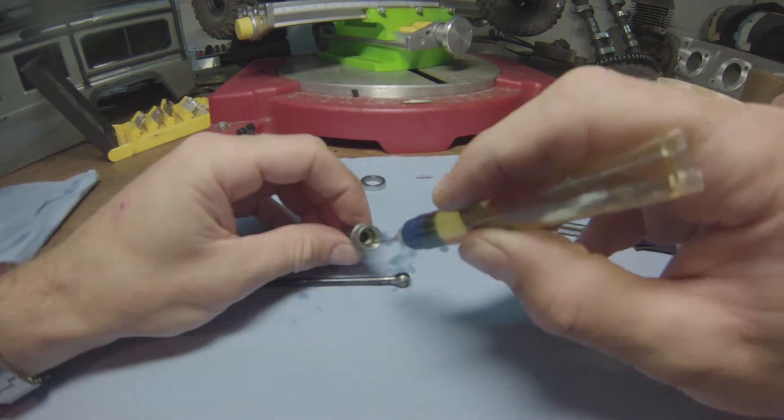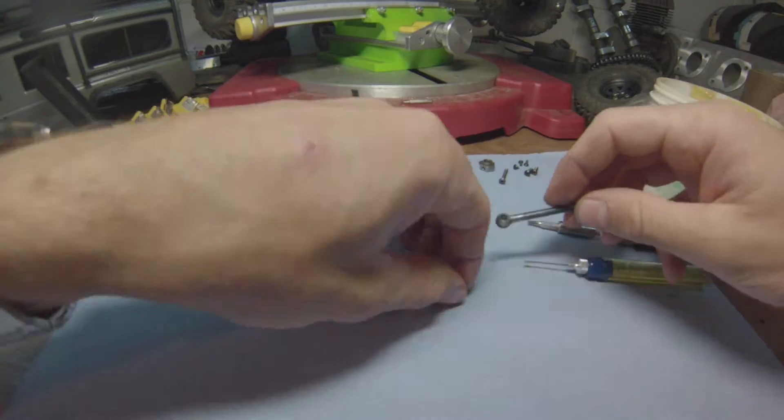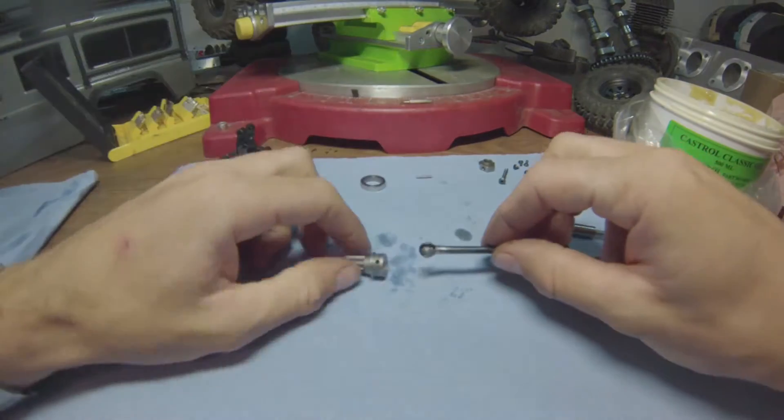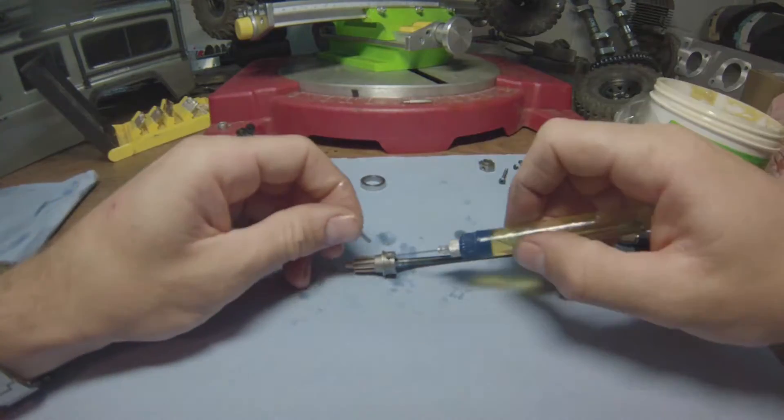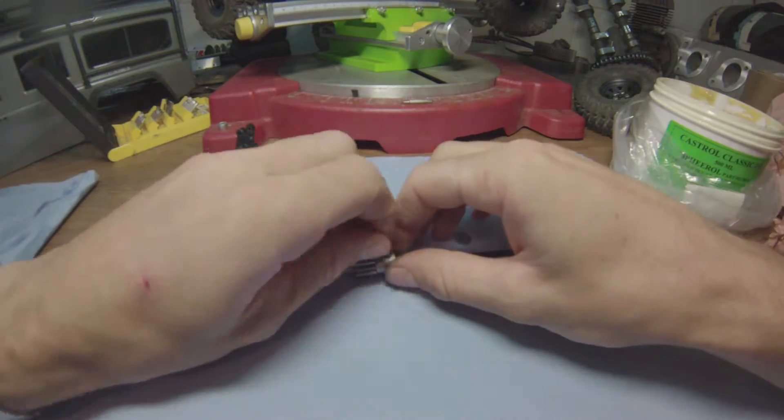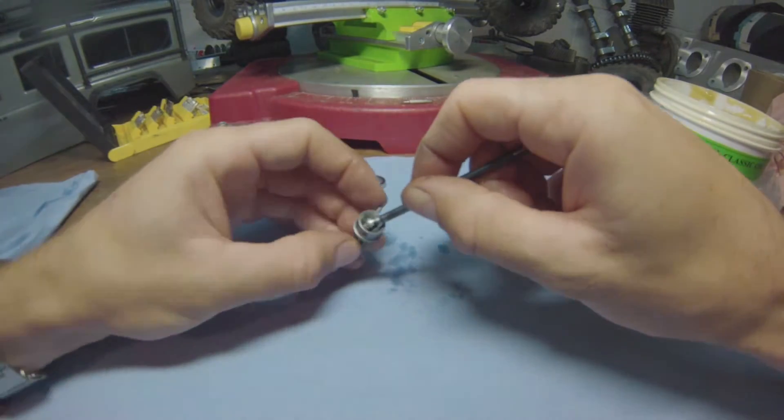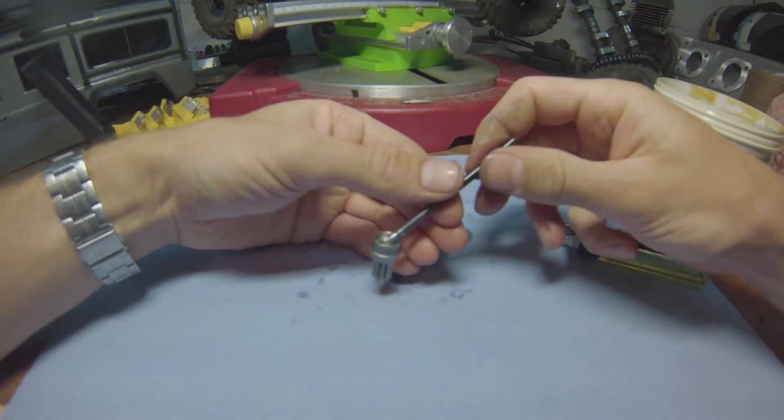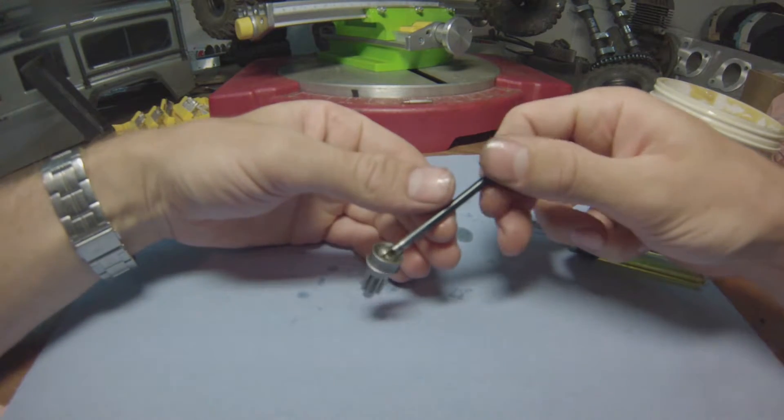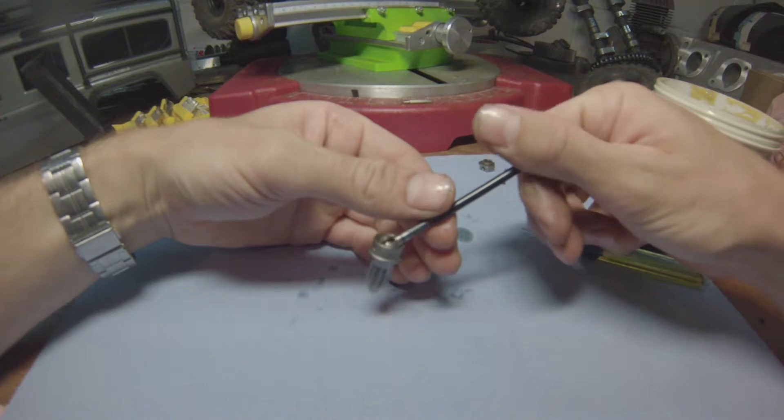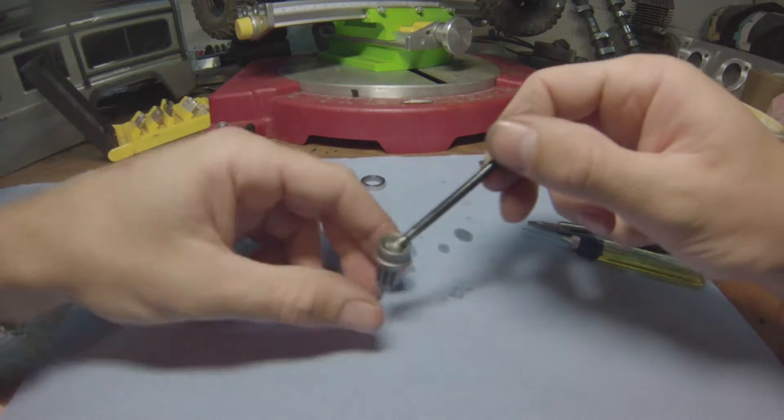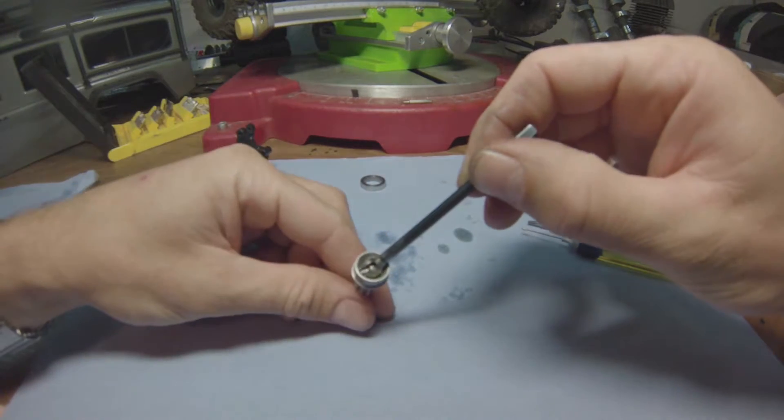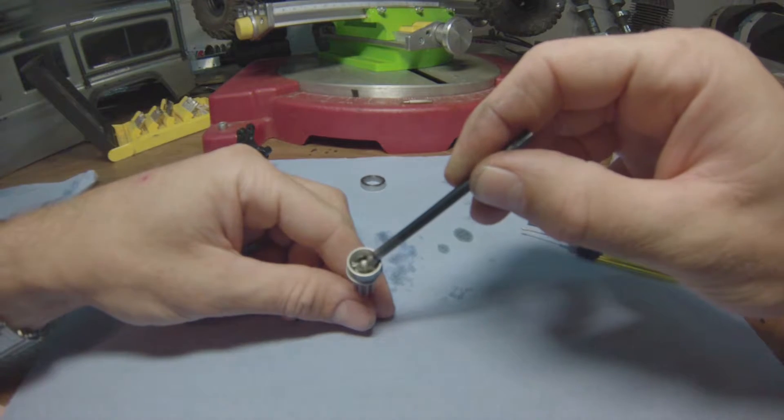Nearly done. So now we want to reassemble the half shaft. A drop or two—you can never really go overboard with this. And there you go. See, it makes sort of a—the oil makes kind of a seal.